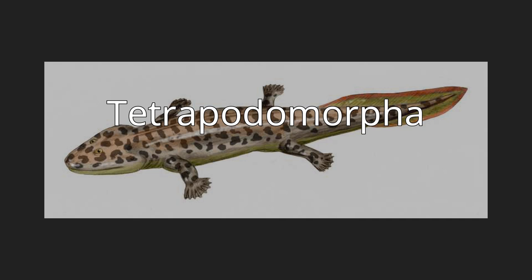Another key trait is the internal nostril, or choana. Most fish have two pairs of nostrils: one on either side of the head for incoming water (incurrent nostrils) and another pair for outgoing water (excurrent nostrils). Early tetrapodomorphs such as Kenichthys had excurrent nostrils that had migrated to the edge of the mouth. In later tetrapodomorphs, including tetrapods, the excurrent nostril is positioned inside the mouth, where it is known as the choana.